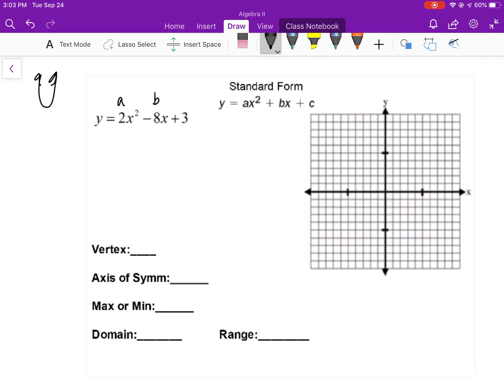So b is negative 8, and you got x equals, and again, I'm finding the axis of symmetry, negative b over 2a. So negative 8 over 2 times 2. So 8 over 4, 2. So x is equal to 2. I'll just go ahead and draw that in while I got that there.